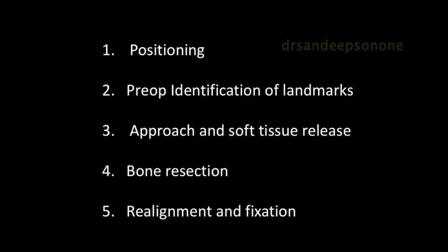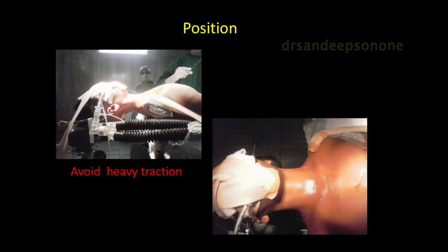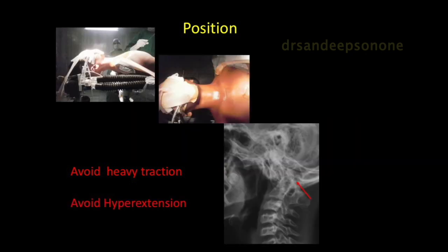The approach covers the positioning of the patient, the preoperative identification of various landmarks on x-ray, the approach and soft tissue release along with bony resection, and finally the realignment and fixation options. The position of the patient is supine on a headrest. Avoid heavy traction because in the presence of kyphosis, excessive traction can compromise the cord. Also avoid hyperextension without doing a proper release, as bony anomalies can put additional pressure on the cord.